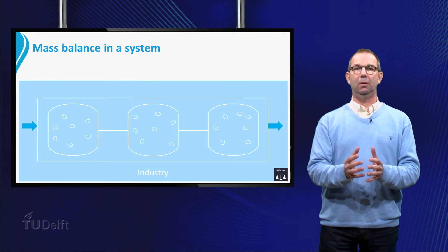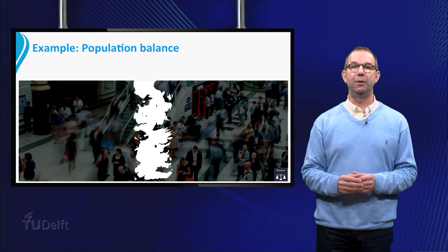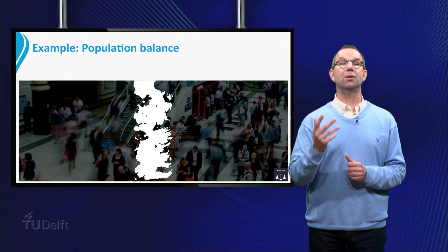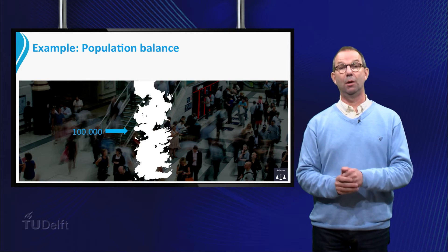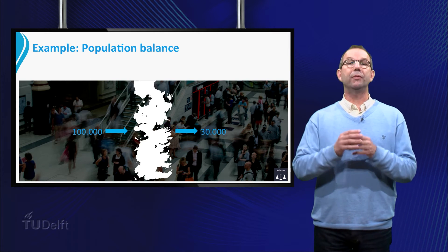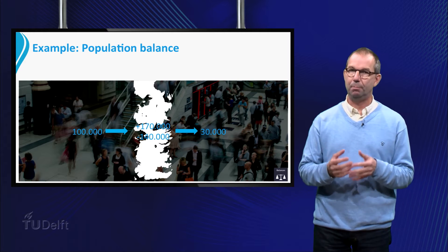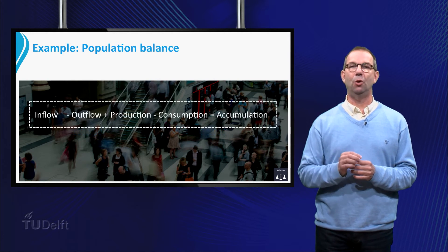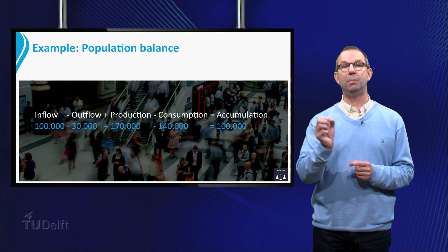Another example of a balance is a population balance. We will illustrate this by looking at the population, the number of people in a country. Each year 100,000 people enter the country, 30,000 leave the country each year, 170,000 babies are born, and 140,000 people pass away. This balance shows that each year the population of this country grows with 100,000 people.